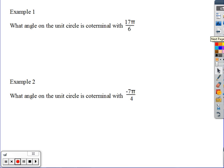What angle in the unit circle is coterminal with 17π over 6? So typically I probably missed on the instructions here. We would want to say that that angle needs to be between 0 and 2π. So when I do this I have two options.